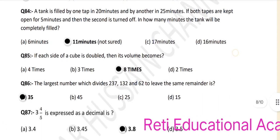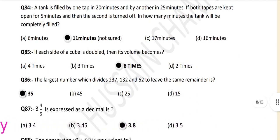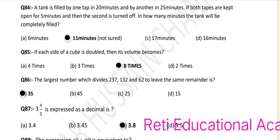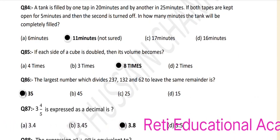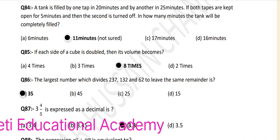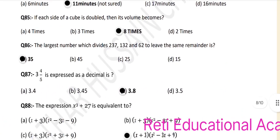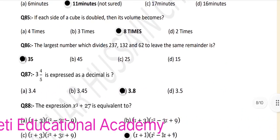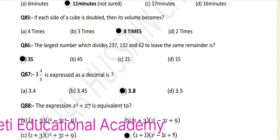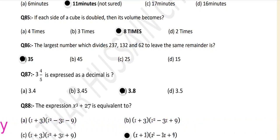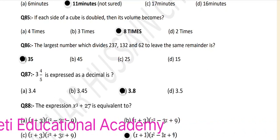Question number 85: If each side of a cube is doubled, then its volume becomes 8 times. Question number 86: The largest number which divides 237, 132, and 62 to leave the same remainder is 35.